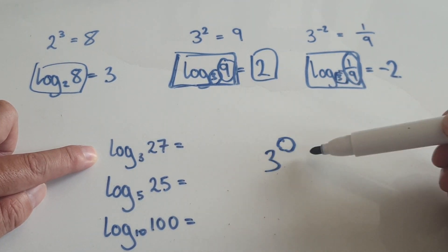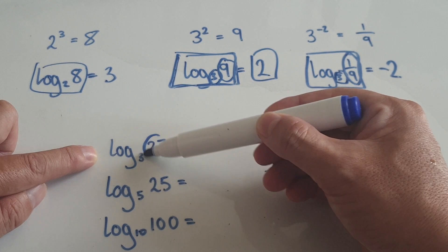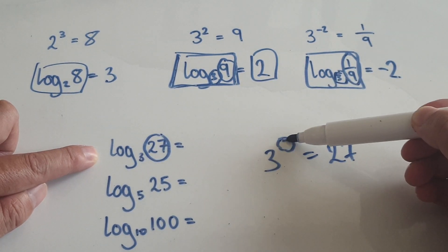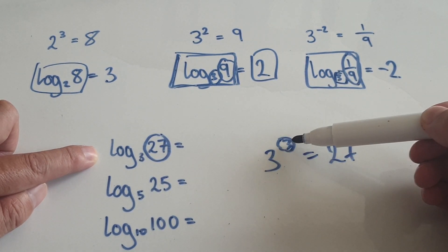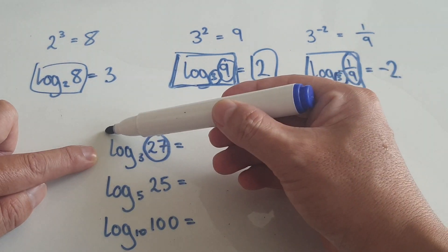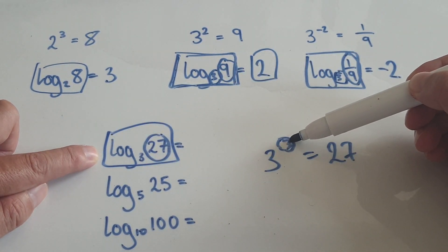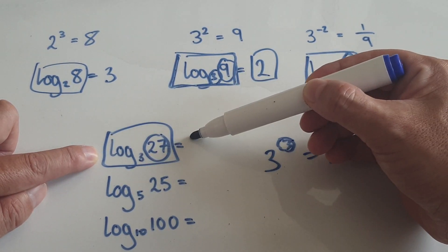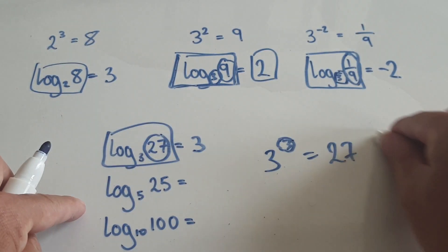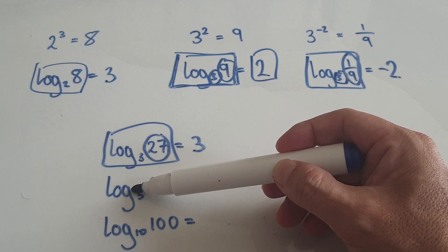3 to the power of what would give me this thing here? Well, it turns out to be 3. 3 cubed is 27. So the whole log block is talking about the index — you're right to zoom into the base.